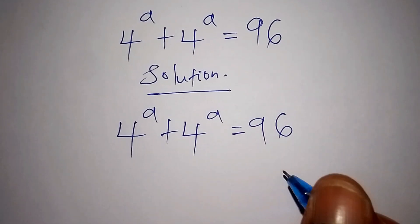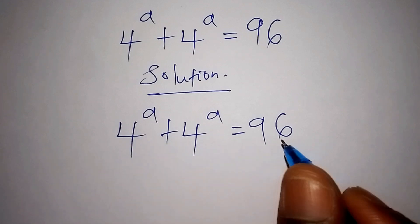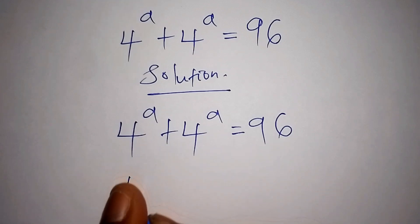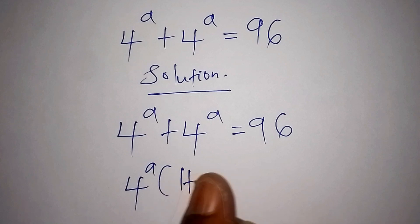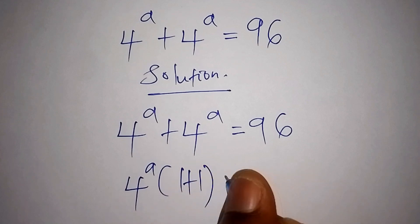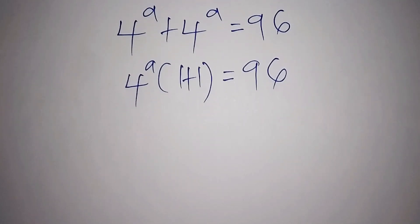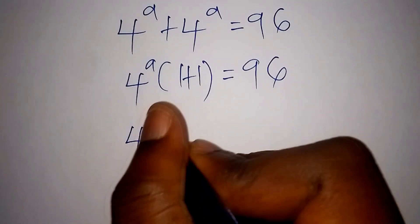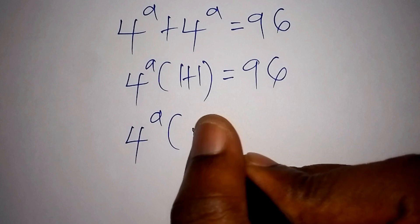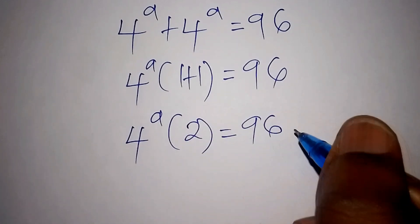The first thing we need to do is factorize 4 to the power of a plus 4 to the power of a. This can be written as 4 to the power of a into bracket 1 plus 1, which is equals to 96. Working out the number inside the bracket: 1 plus 1 is 2, so we have 4 to the power of a times 2 equals 96.